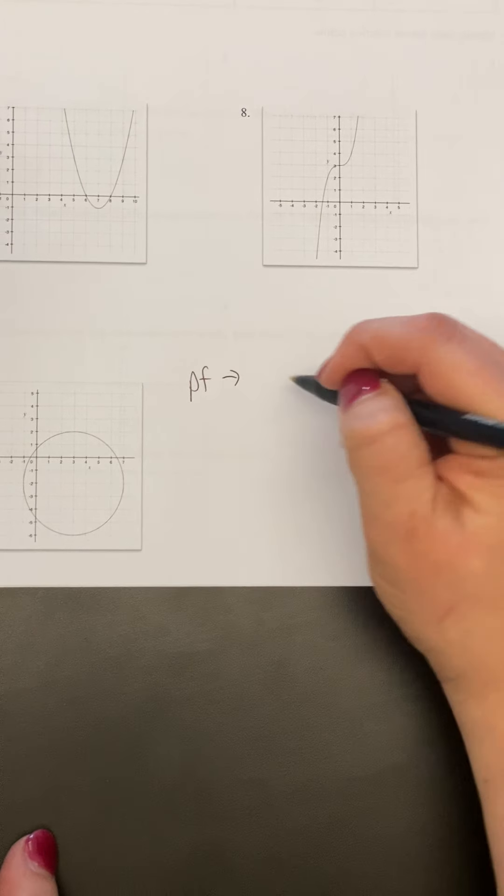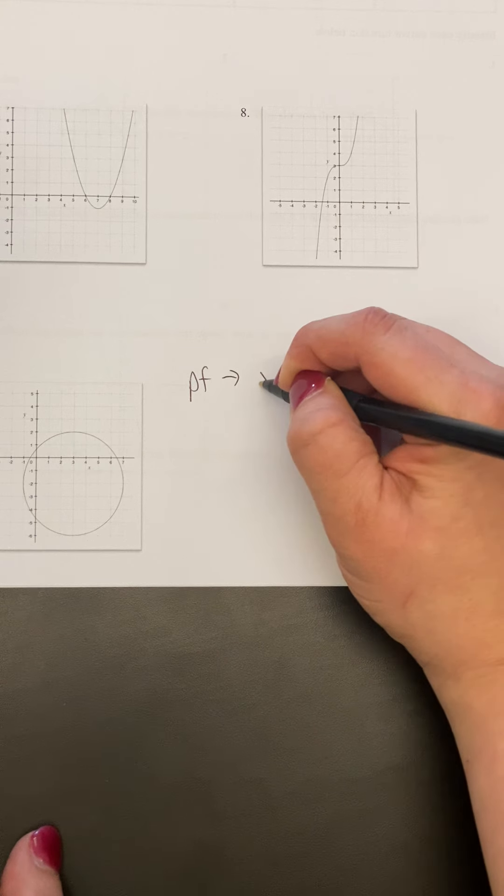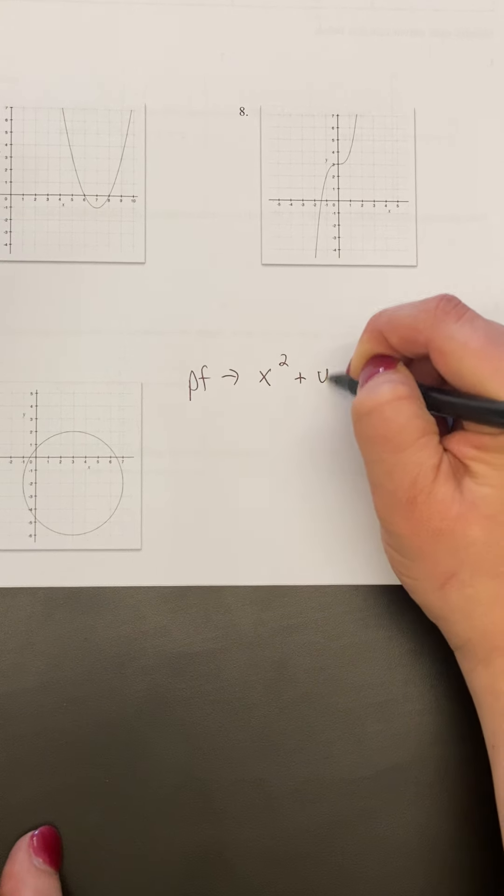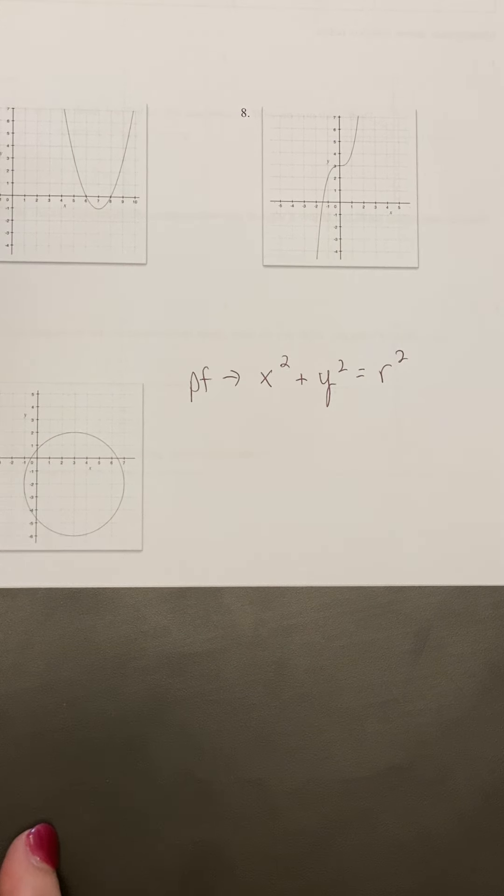So what I mean by that is I'm going to first find my parent function. And for a circle, a lot of people forgot the equation for a parent function. That's x squared plus y squared equals r squared. And so I need to know how it moved and how the radius changed.